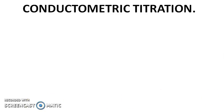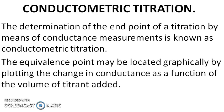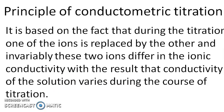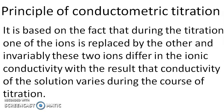Conductometric titration is one method of conductometry. In conductometric titration, we carry out the titration by determining the endpoint through conductance measurement. The equivalence point or the endpoint of the titration is determined graphically by plotting the change in conductance as a function of volume of the titrant added.